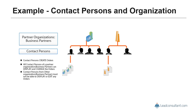However, contact persons from one business partner must not be able to display or edit orders that belong to a different business partner. These two examples show that access requirements can differ for different external users. Securing sensitive information while providing access to relevant information presents a challenge — in the next video, we'll see how ACE handles this task.